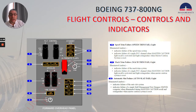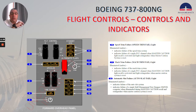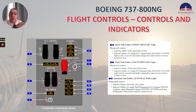The speed trim fail light — illuminated amber — indicates failure of the speed trim system, or indicates failure of a single FCC channel when master caution light recall is activated, and extinguishes when master caution system is reset. The mach trim fail light — illuminated amber — indicates failure of the mach trim system, or indicates failure of a single FCC channel when master caution light recall is activated, and the light extinguishes when master caution system is reset.